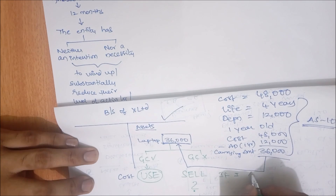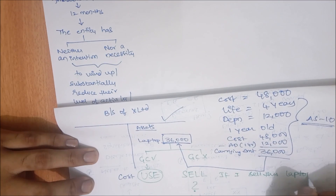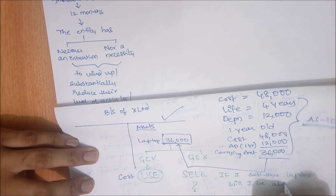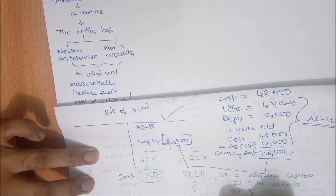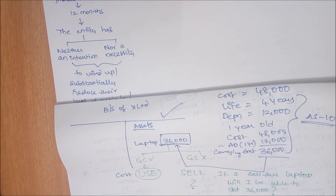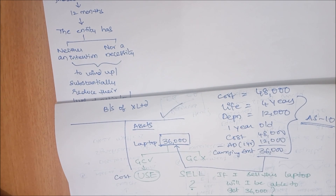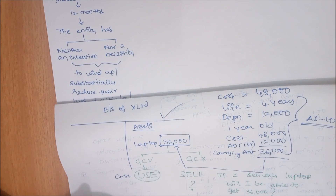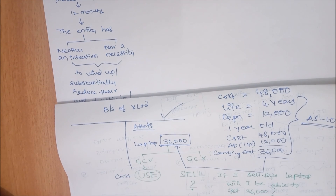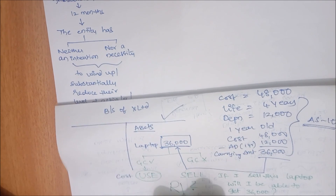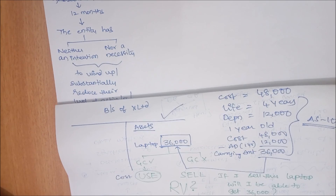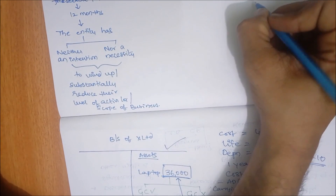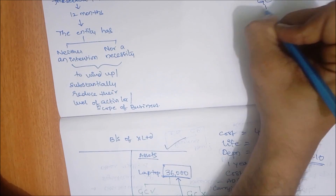In case of winding up, if I sell this laptop, will I be able to get 36,000? In the majority of cases, the answer will be no. So when you cannot get 36,000, you should reduce this value to the recoverable value. If the entity is a going concern, showing the asset at 36,000 is fine. But if the entity is no more a going concern, you cannot show it at 36,000 — you should show it at its realizable value.